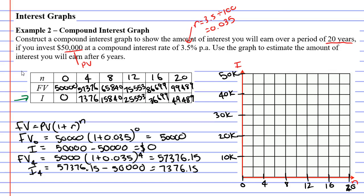Let's join them up. We're focusing on n and i. When n is zero, i is zero. That's our first marker. When n is 4, we have 7,376, which goes approximately here, almost three quarters of the way up to 10,000. When n is 8, we have 15,840, almost halfway between the 10 and the 20k.